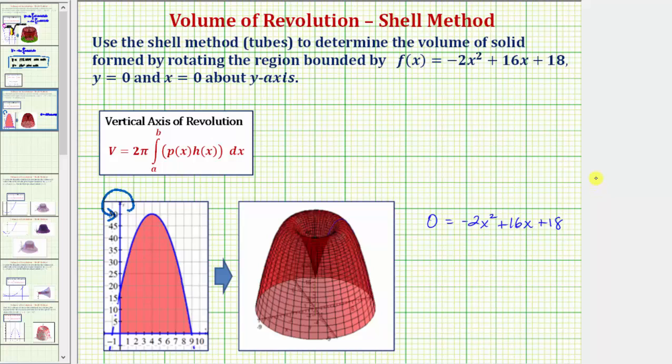Let's solve this equation by factoring. The greatest common factor is 2. But because the leading coefficient is negative, let's factor out negative 2. So we have negative 2 times the quantity positive x squared minus 8x minus 9.